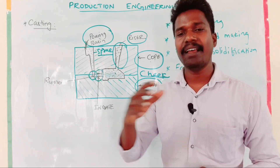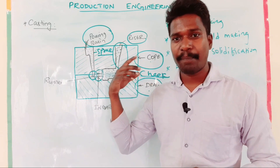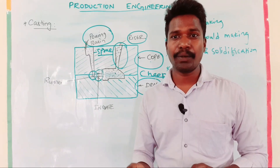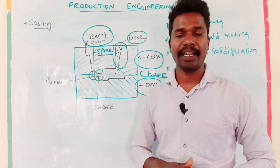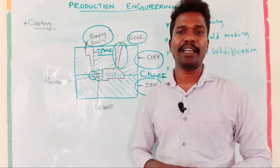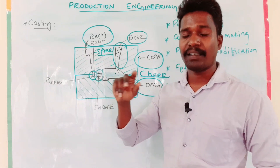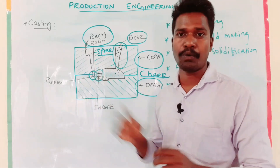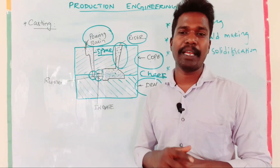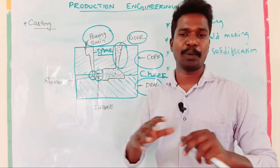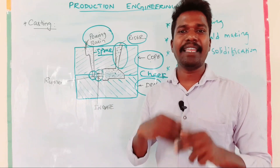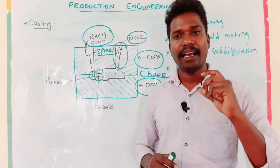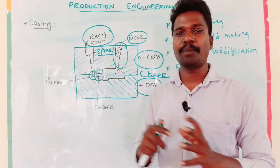Expandable mold casting has this problem. Permanent mold casting and expandable mold casting are the two main casting methods. Another casting method is semi-permanent mold casting. In the semi-permanent mold, the mold is used for a minimum of 10 castings. It uses highly refractory material like graphite, so it can be used 10 times.